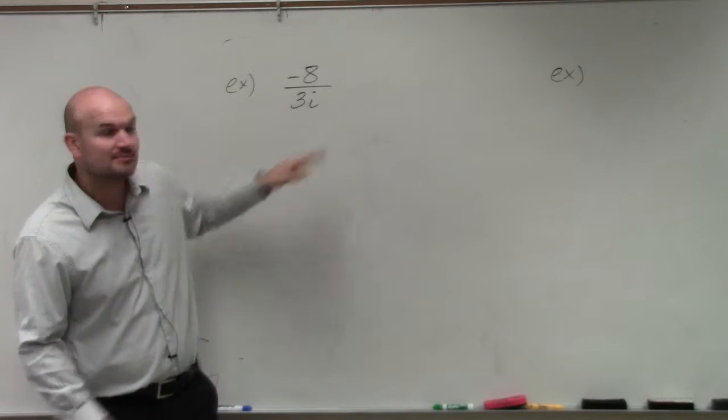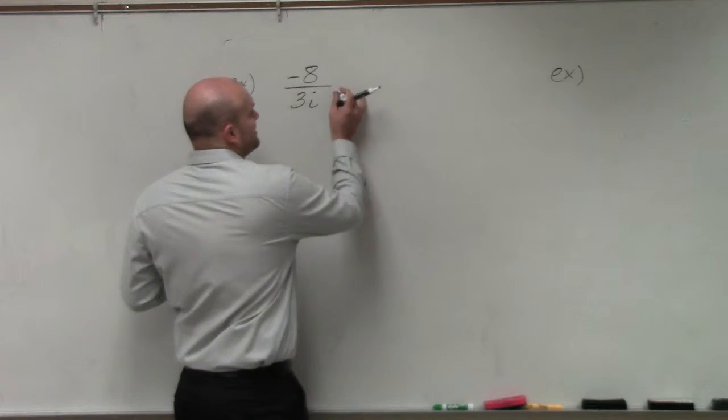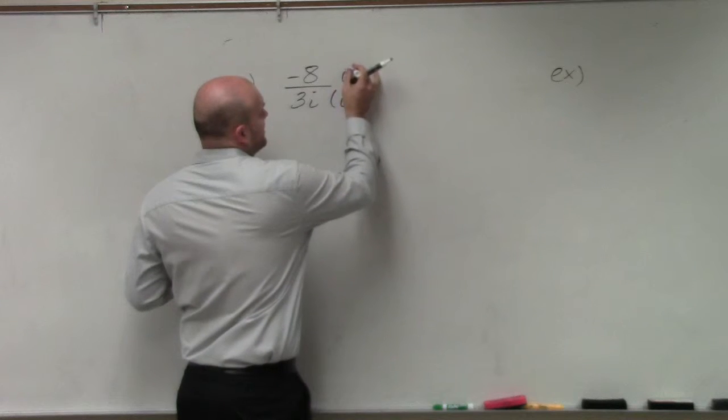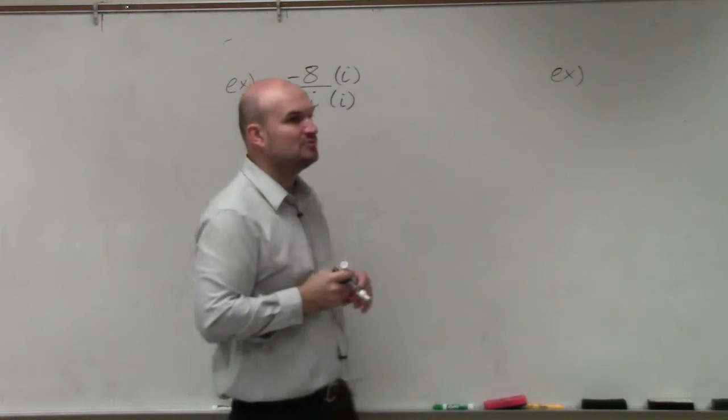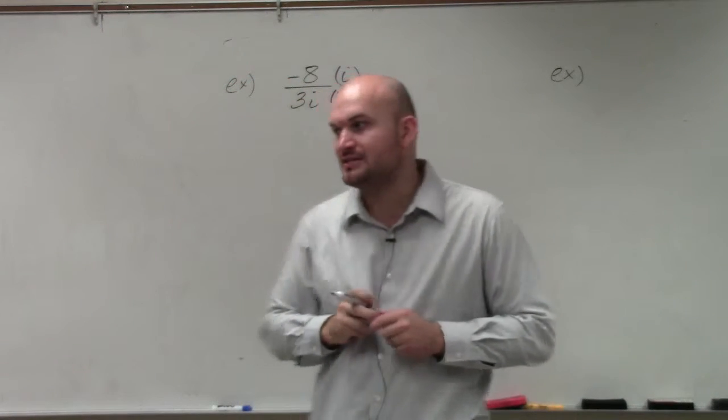So to simplify this, what we can do is get rid of i in the denominator. We can do that by multiplying by i on the numerator and the denominator.